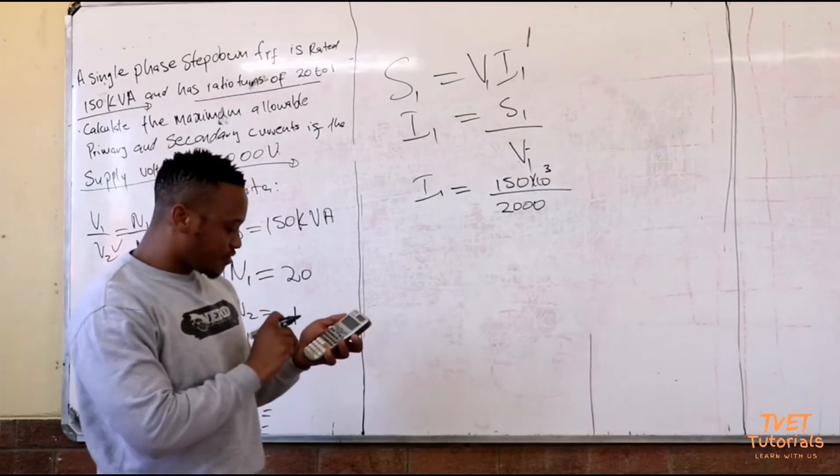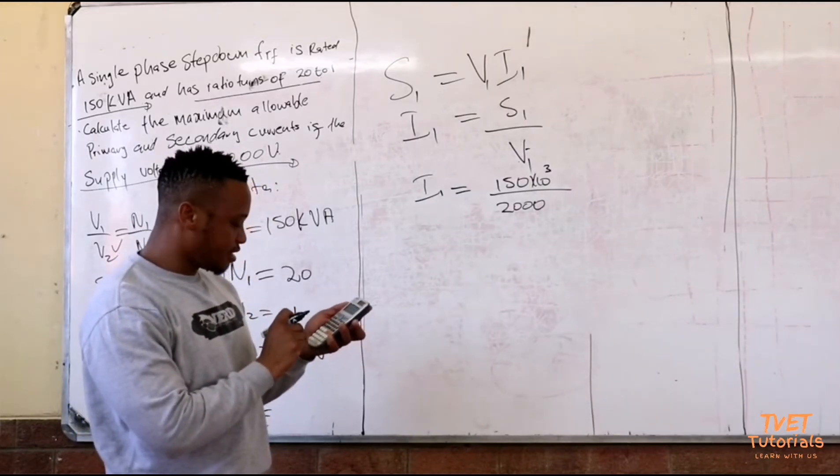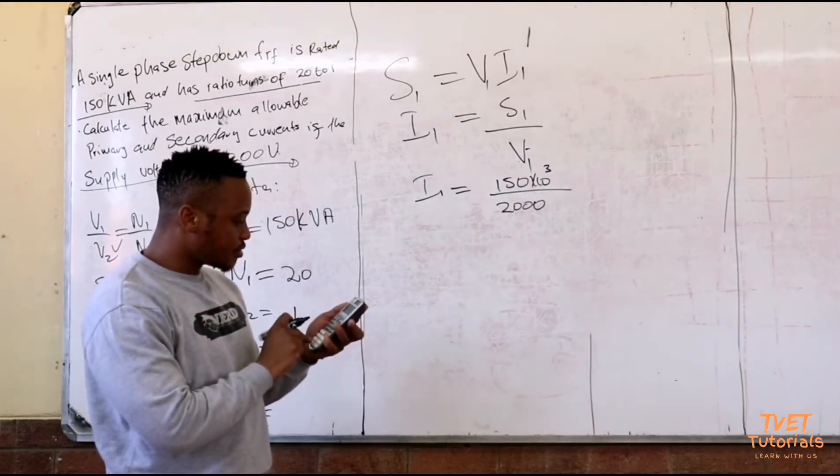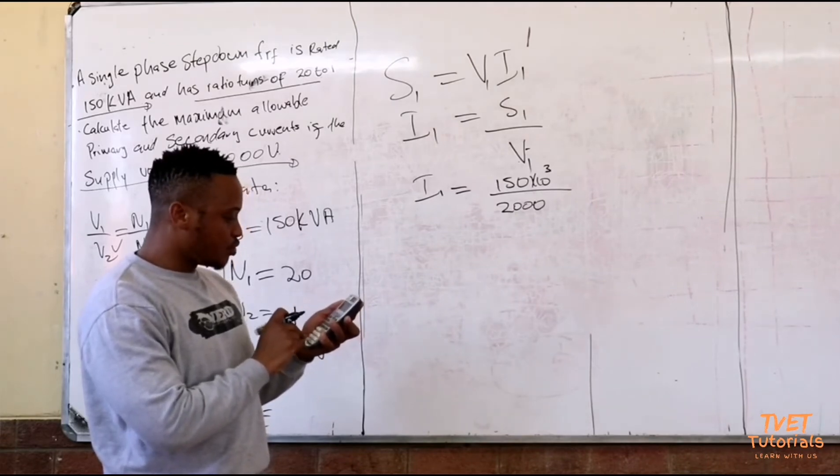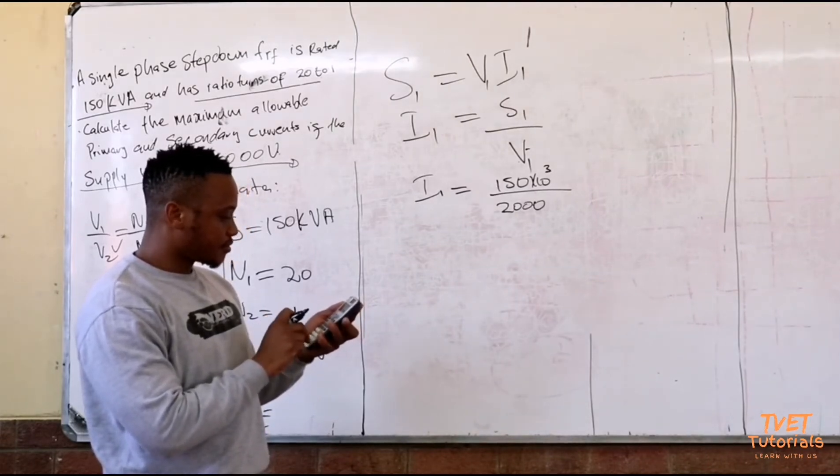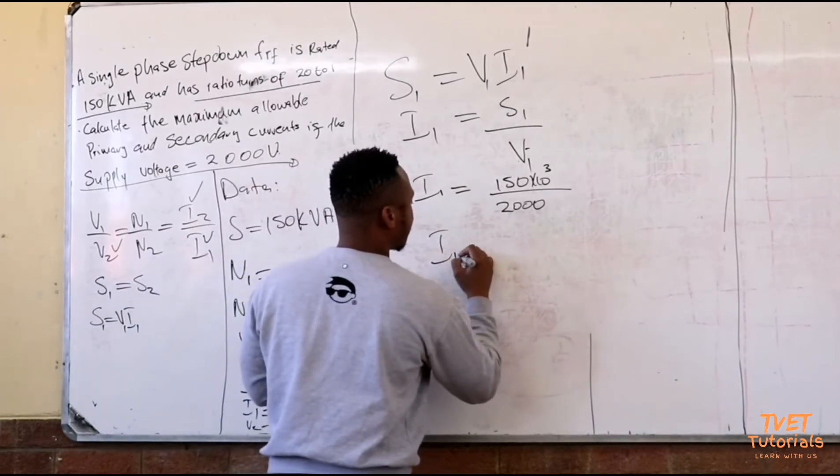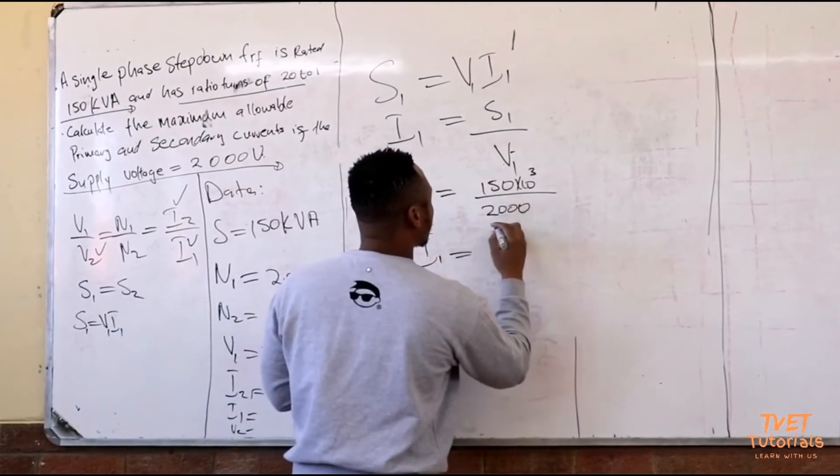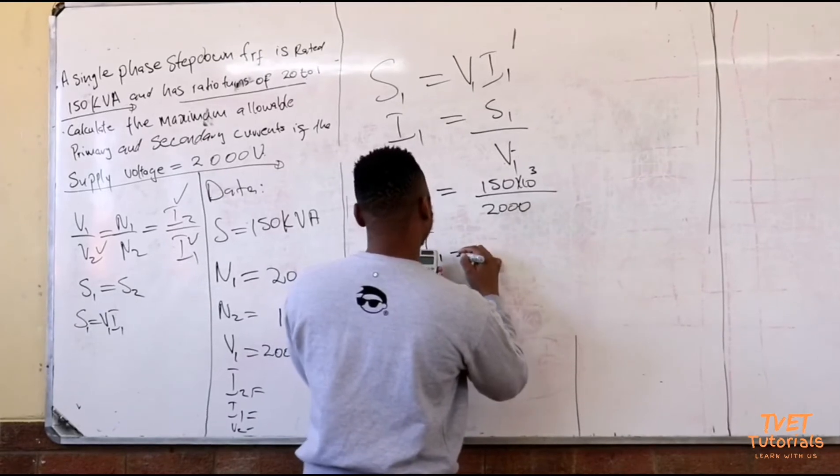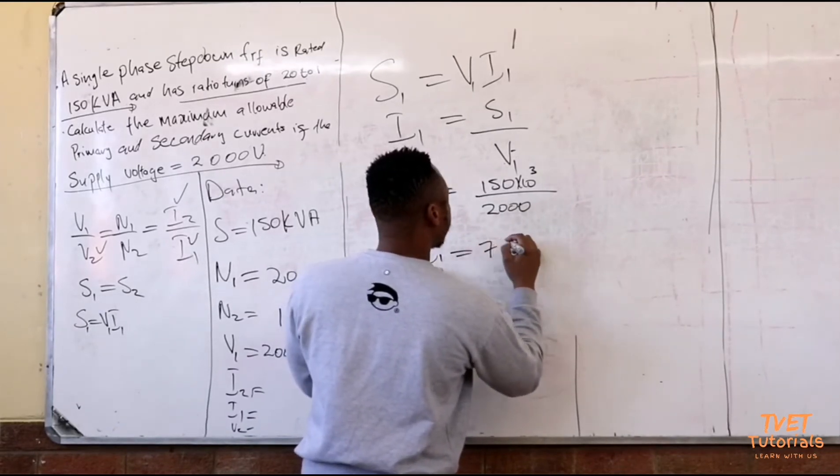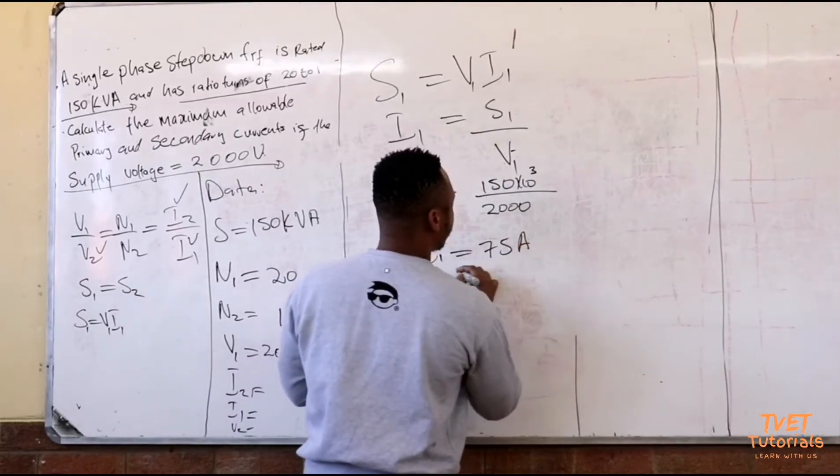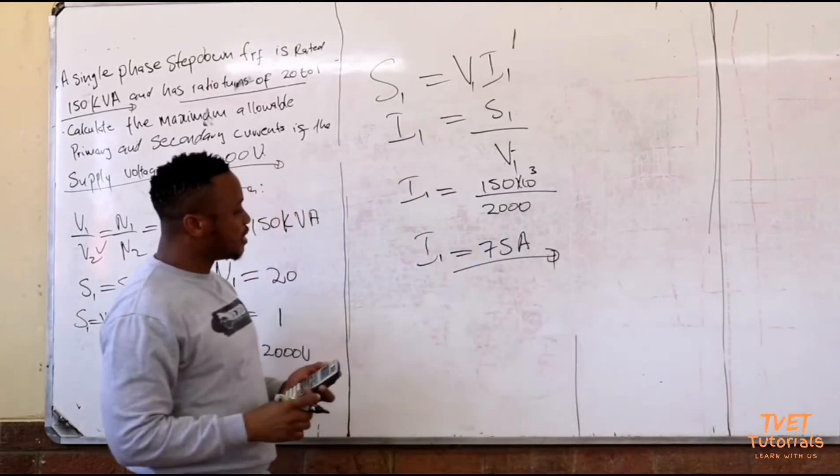If I punch in those values, I have 150,000 divided by 2,000. And I get my primary side current i1 is then equal to 75 amperes. So I have the value i1.